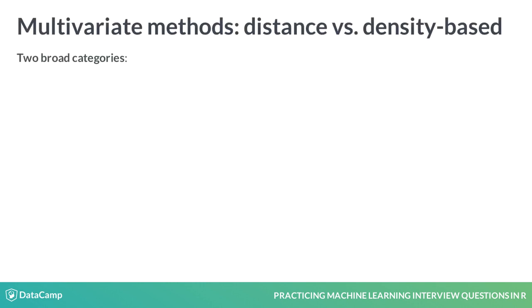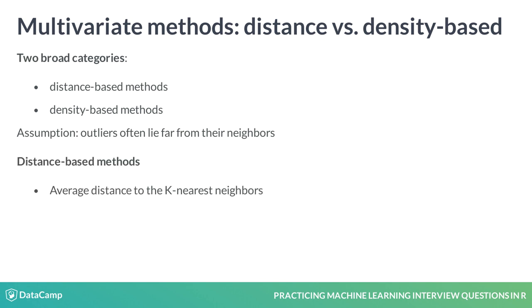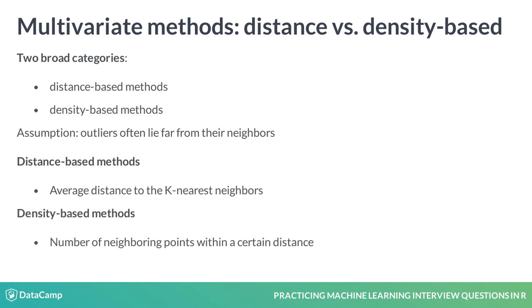Multivariate methods can be broadly categorized as either distance-based or density-based. They both rely on the reasonable assumption that anomalous observations frequently lie far from their neighbors. Distance-based methods often use the average distance to their k nearest neighbors as an indicator of the extremeness of the observation. Density-based methods operate by counting the number of neighboring points within a predefined reachability distance.